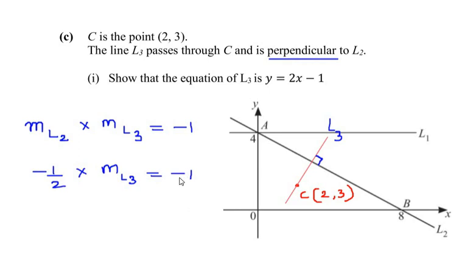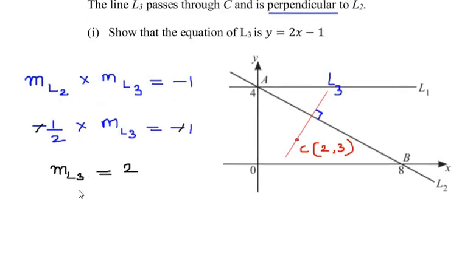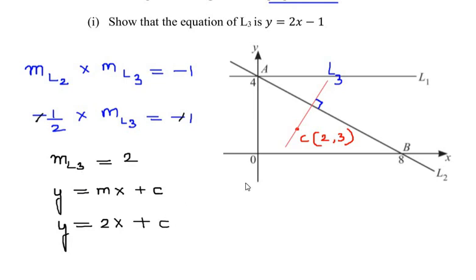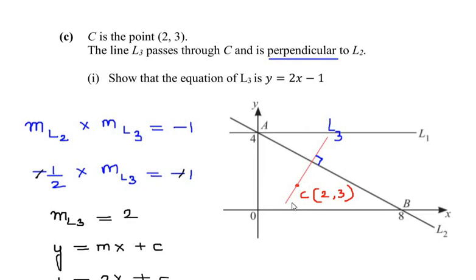We can cancel the negatives from both sides, and 1/2 moves to the other side of the equals sign and becomes 2. So the slope of line L3 is 2. Now, putting this into the standard form of a straight line, we have y = 2x + c for line L3.